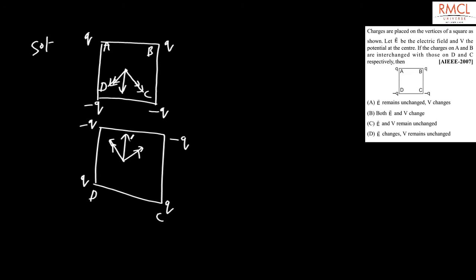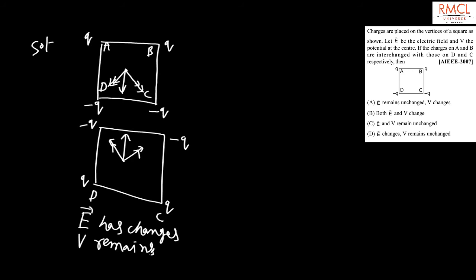So the electric field has changed, but the potential remains the same. Therefore, the correct option is D: E changes and V remains unchanged.